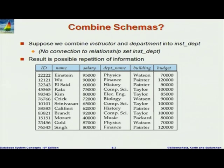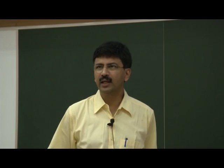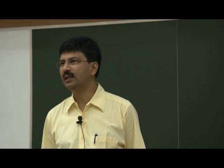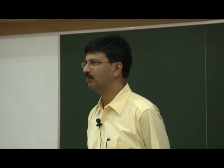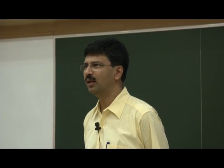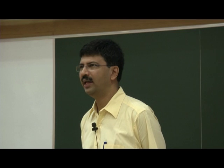So what is wrong with this relation? It combines information from the instructor and department relation. It has ID, name, salary, department name, and then for the department, building and budget. You can see a few problems in this table. A given department, according to our principles, has a given budget and a given building.